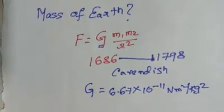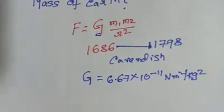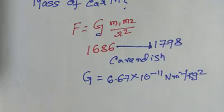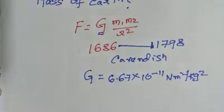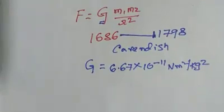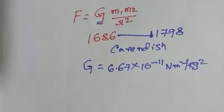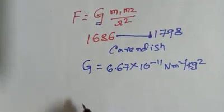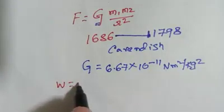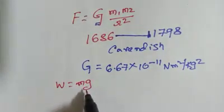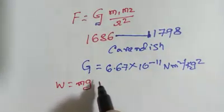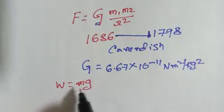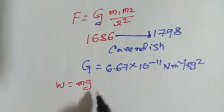So it took almost 100 years, from 1686 to 1798, for Henry Cavendish to get the value of G. As soon as we arrived at the value of G, it became extremely easy for physicists to calculate the mass of Earth. We know from the previous formula that W equals to Mg, which is the weight as the force of gravity on the object.